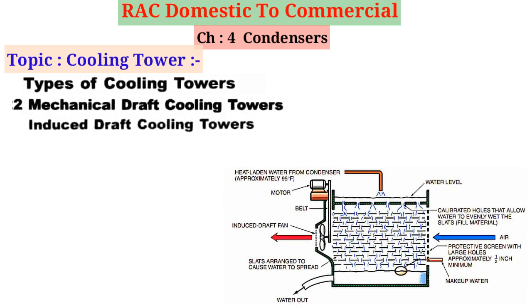In induced draft cooling towers, the fan sucks the air through the tower. These are similar to forced draft cooling towers except that the fans are located at the top instead of the bottom, and draw the air upward through the tower.